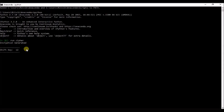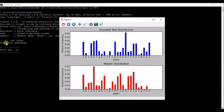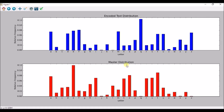Now let's try to decrypt this document. We can see the program suggests a shift of 12. Let's see if that's meaningful. We can see here in red the master distribution, and we can see above in blue the encoded text distribution.